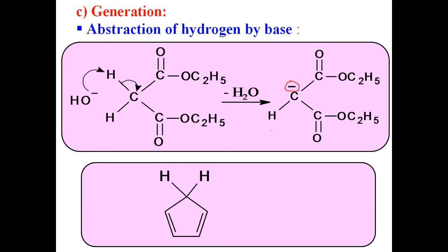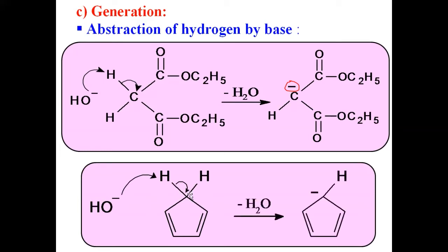Let us see another example — this is cyclopentadiene. When it comes in contact with a base, the base abstracts the hydrogen atom; the bond between carbon and hydrogen undergoes breaking, and the electron pair goes onto the cyclic carbon, which acquires a negative charge. This is again an example of a carbanion. This carbanion is more stable due to aromaticity — it is the cyclopentadienyl anion, and it is aromatic because it is a cyclic compound with six pi electrons satisfying the 4n+2 rule. Those six electrons are delocalized in the ring, making it a highly stable compound. Therefore, the base can easily abstract the hydrogen to form the corresponding carbanion, which is more stable due to aromaticity. This is the first method for the generation of carbanion.